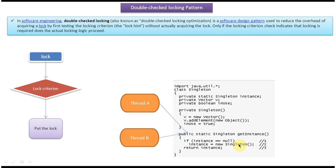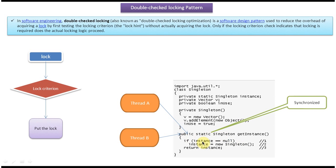This is against the singleton design pattern and is wrong. To avoid this problem, we can make the getInstance method synchronized. Once the method is synchronized, when Thread A executes it, it puts the lock immediately. Until Thread A finishes, Thread B cannot enter the method. Once Thread A finishes, Thread B can enter and put the lock. So every time the method is called, a lock is put immediately. But here we are not checking whether the lock is needed or not — as per the double-checked locking design pattern, we are just making the entire method synchronized.